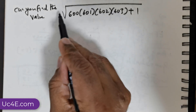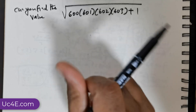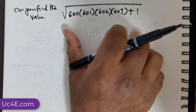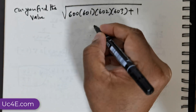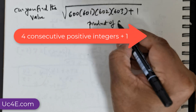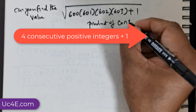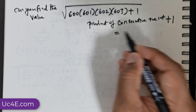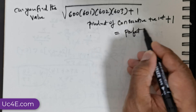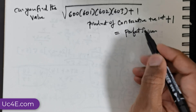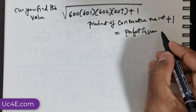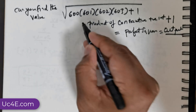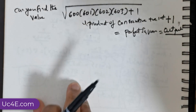Good day everybody. We have this question: we need to find the value of the expression √(600 × 601 × 602 × 603 + 1). The main idea is that if you take the product of consecutive positive integers and add one, the result will be a perfect square. Since it's a perfect square, applying the square root function gives us the answer directly. This is the key idea emphasized in this question.